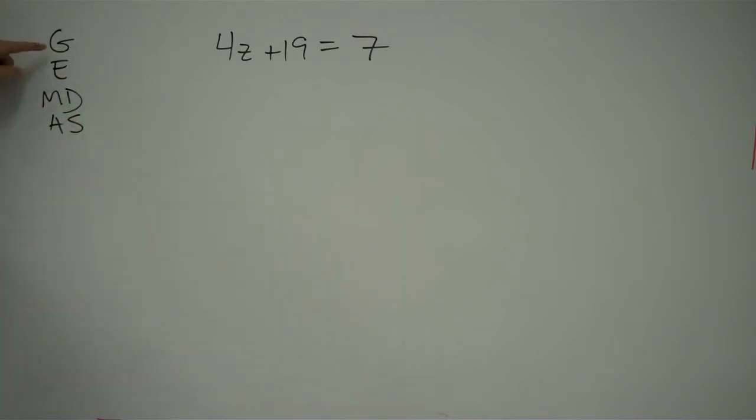First, you look at groups, then you look at exponents, then you look at multiplication and division. Neither one outranks the other, so you just go left to right. Then you look at addition and subtraction.